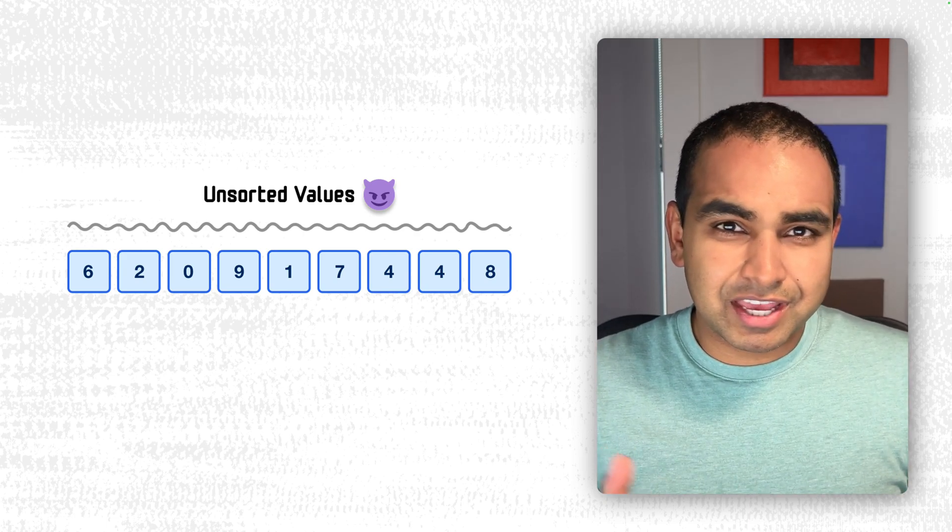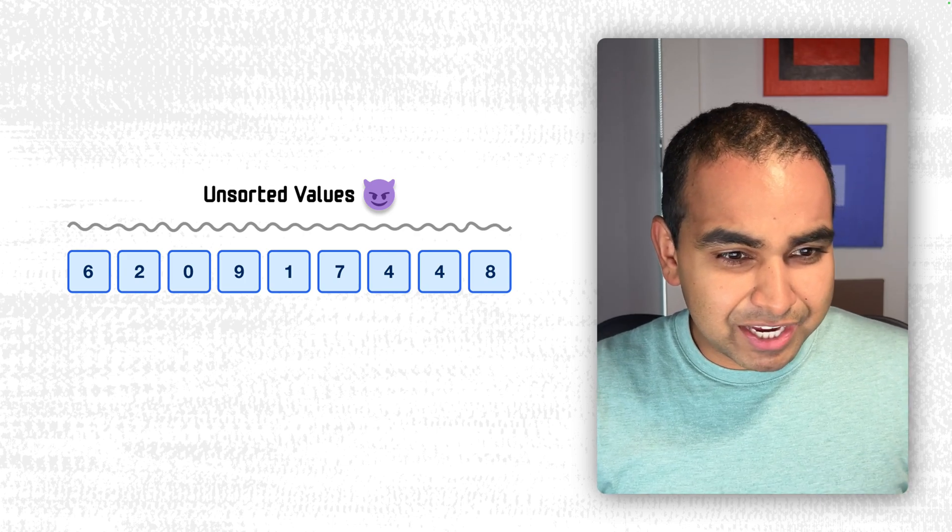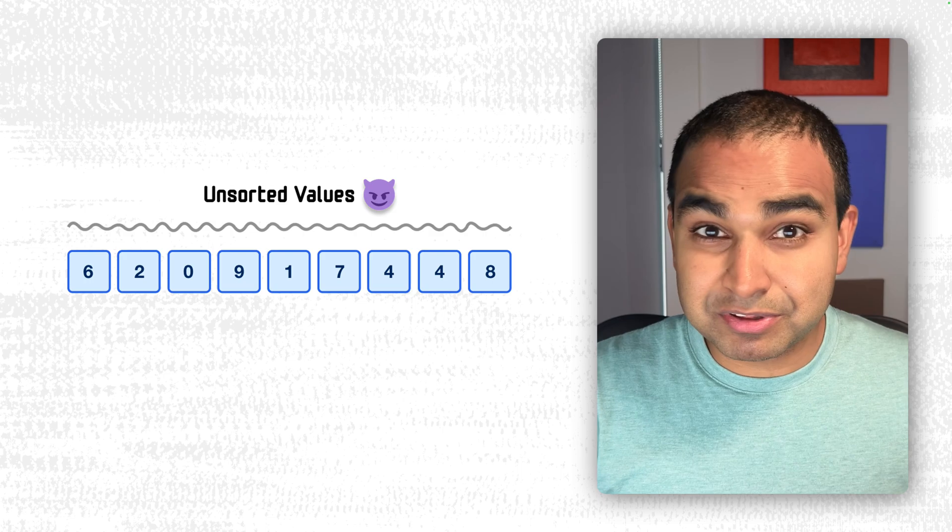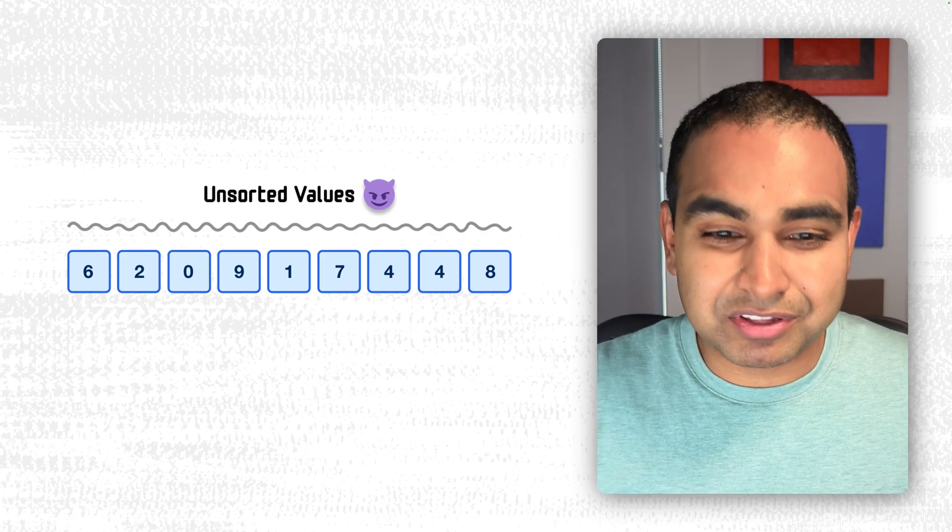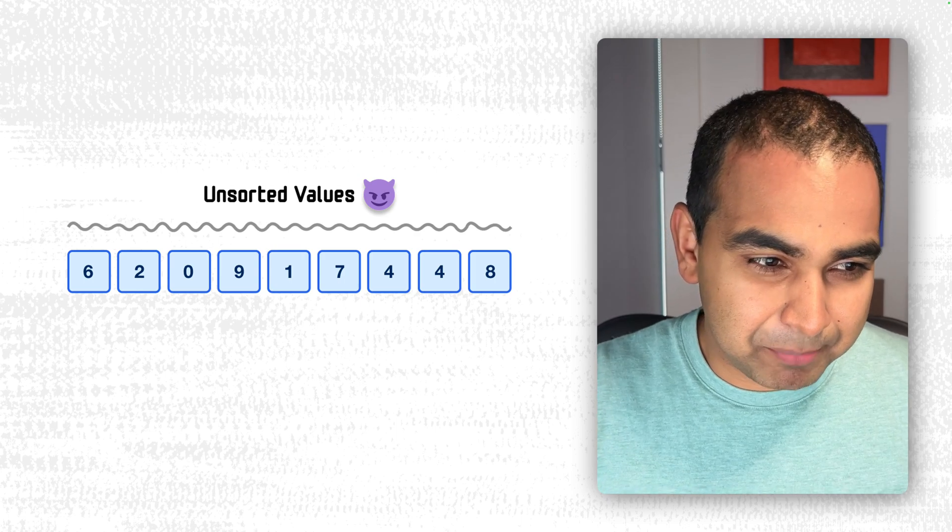So here we have our unsorted values and we're dealing with numbers again. And in this collection, we have 6 2 0 9 1 7 4 4 8. And our goal is to use bubble sort to sort these values from smallest to largest. So it seems like a pretty straightforward mission for us to embark on.